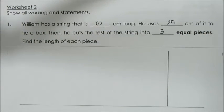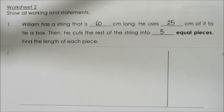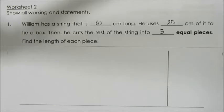William has a string that is 60cm long. He uses 25cm of it to tie a box. Then, he cuts the rest of the string into 5 equal pieces. Find the length of each piece.